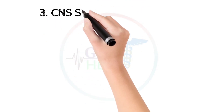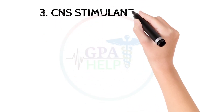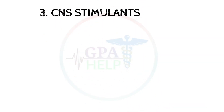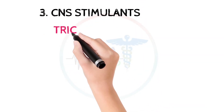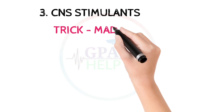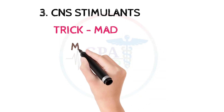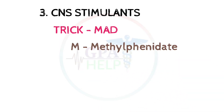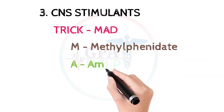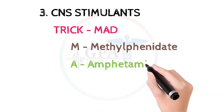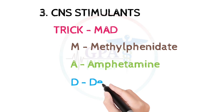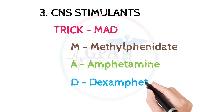The third class is CNS stimulants. You can remember these drugs by the trick: MAD. M for methylphenidate, A for amphetamine, and D for dexamphetamine.